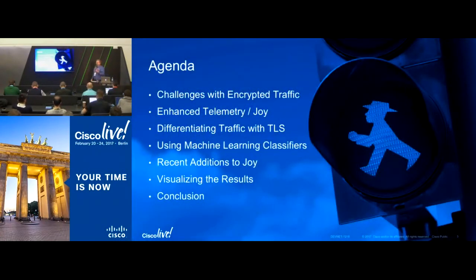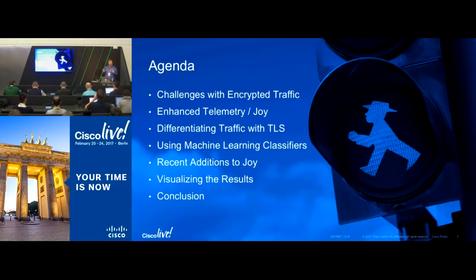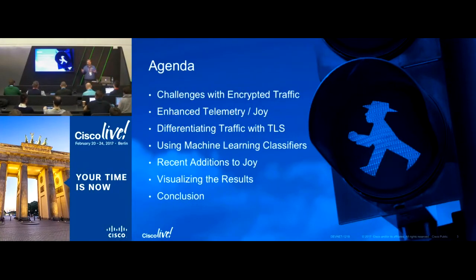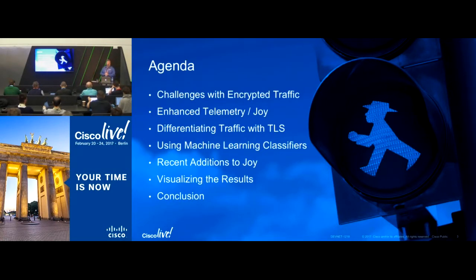We're going to talk about encrypted traffic and some of the problems around it, how we can get interesting bits of information out of the pieces that are not encrypted when looking at encrypted flows, what Joy is and how we use it, the machine learning aspects, and the latest additions to the Joy software package so you can get more information and knowledge out of your encrypted flows. My name is Bill Hudson. I'm a technical leader in our security and trust organization, actively working on this project.